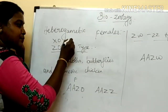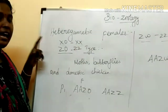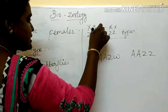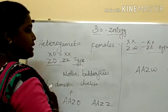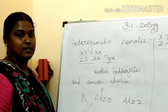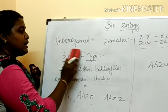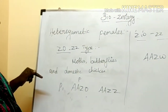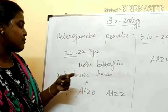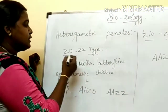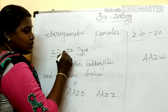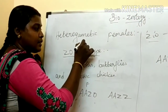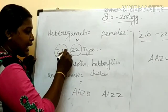To avoid confusion — the ZO/ZZ is similar to the XO/XX type, and the ZW/ZZ is similar to the XY pattern, which is the Drosophila pattern. So to avoid confusion we write ZO/ZZ. The heterogametic females are present in moths, butterflies, and domestic chickens. ZZ represents homozygous males, while ZO represents the heterogametic female.